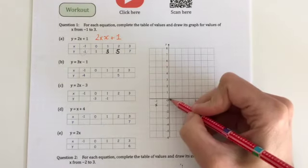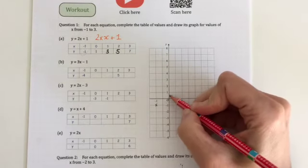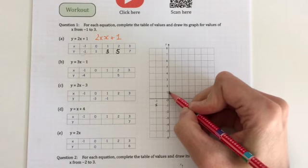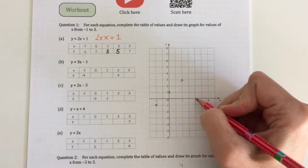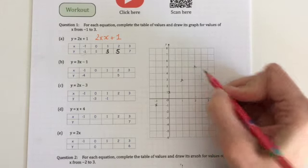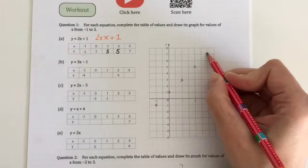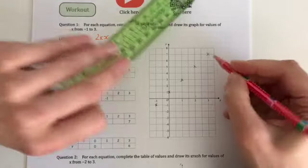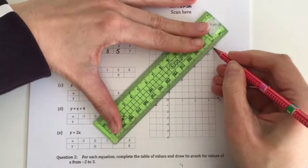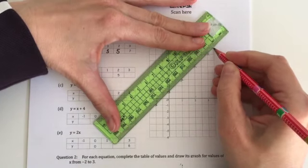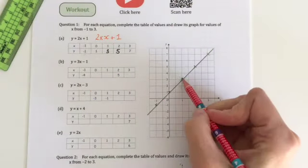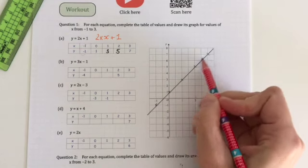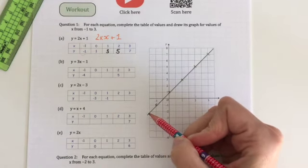We've got 0, 1. We've got 1, 3, 2, 5, 3, 7. And what you should find is that these join up without any of the coordinates being out of line. So one of them isn't up here - they're all in line with each other.